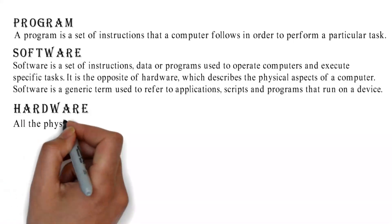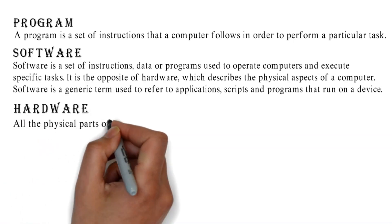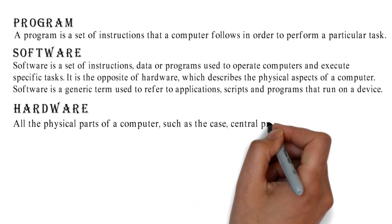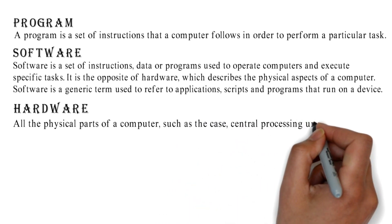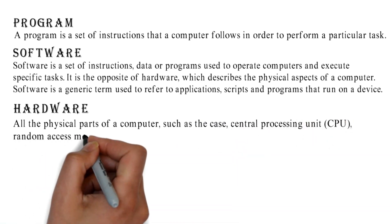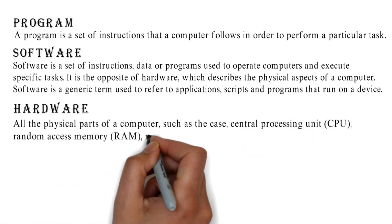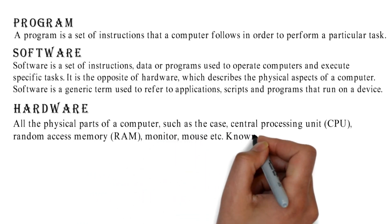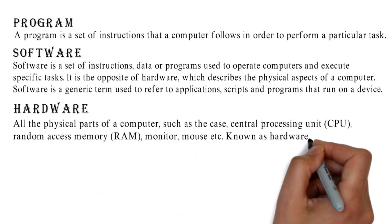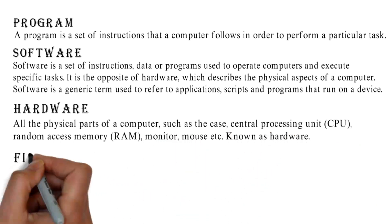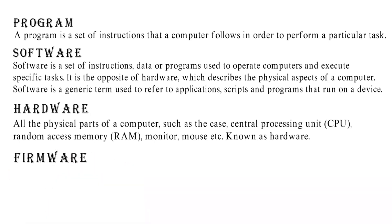Hardware refers to all the physical parts of a computer, such as the case, central processing unit (CPU), random access memory (RAM), monitor, mouse, etc.